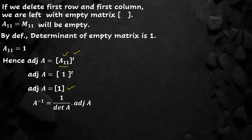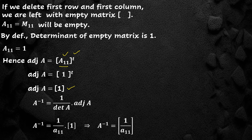Now we apply the formula: A inverse equals 1 over determinant of A into adjoint of A. Substituting the values of determinant of A and adjoint of A, we get A inverse equal to matrix 1 over A11. For example, if we take a matrix A equal to 5, then A inverse is equal to 1 over 5.